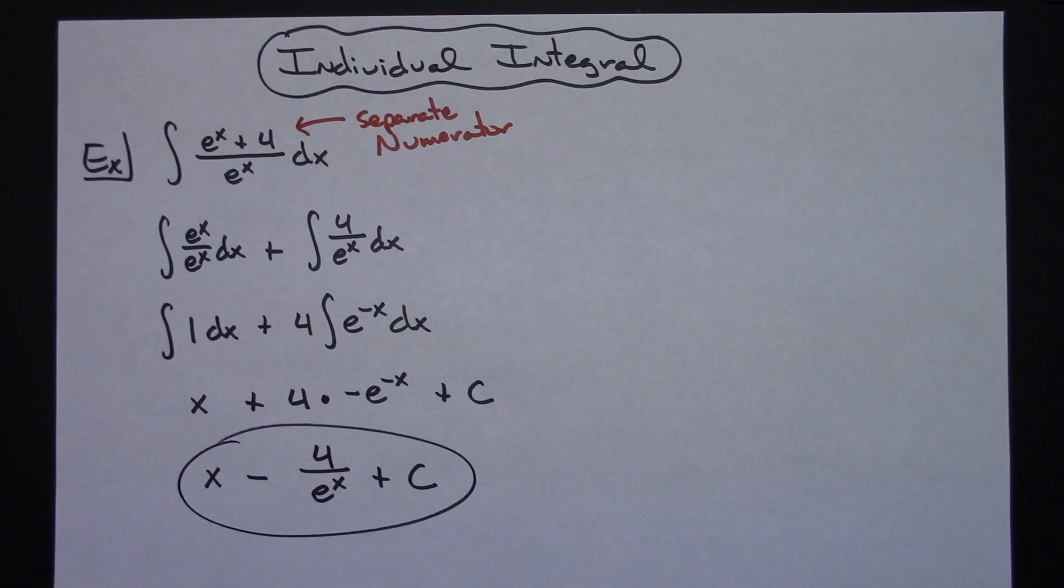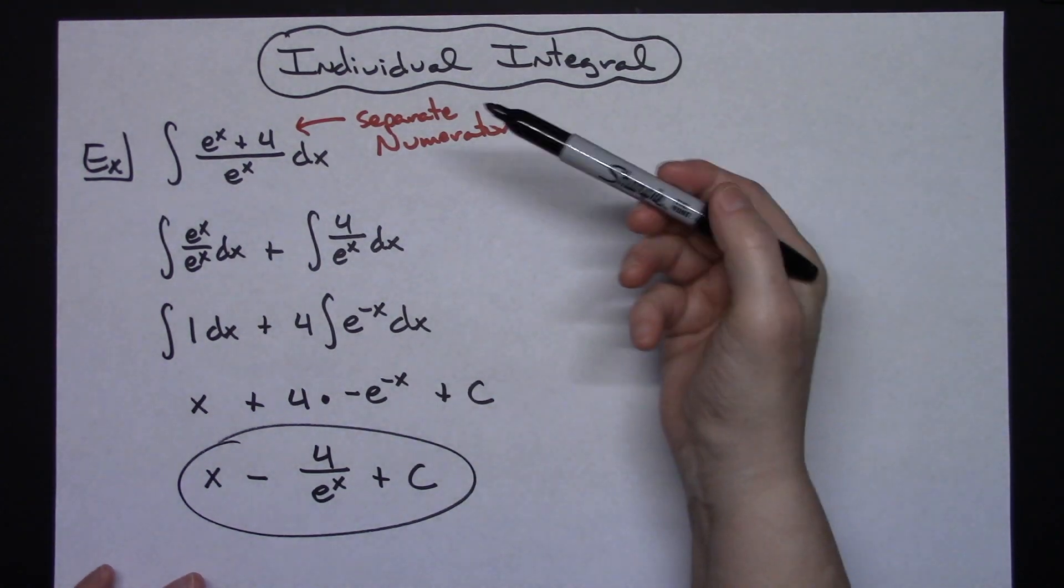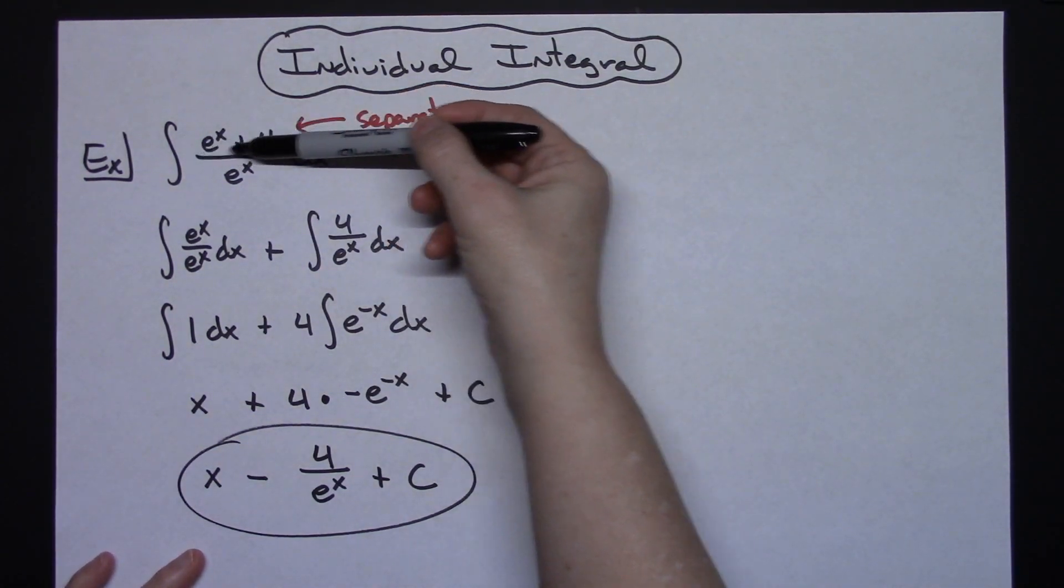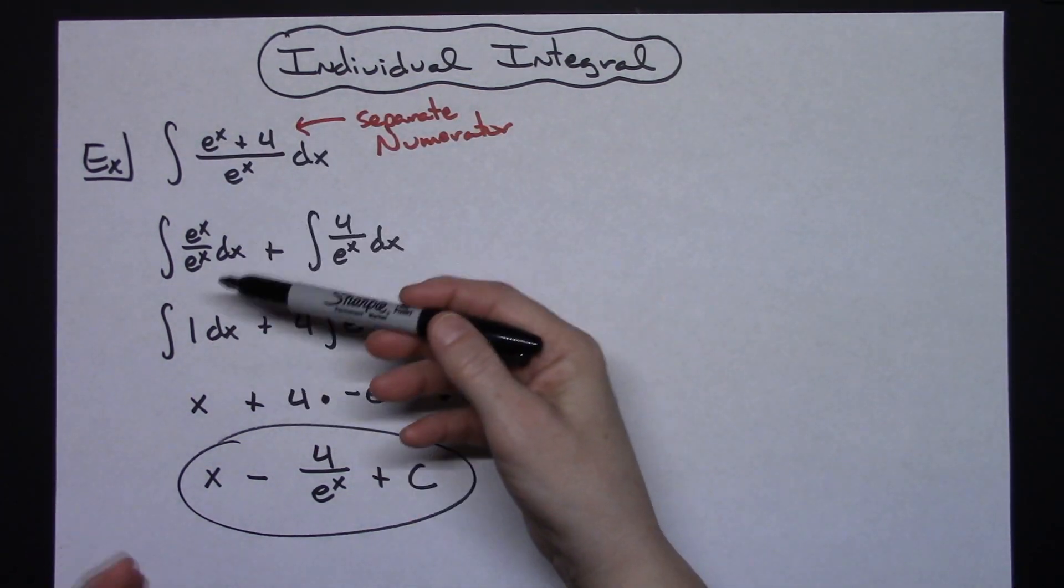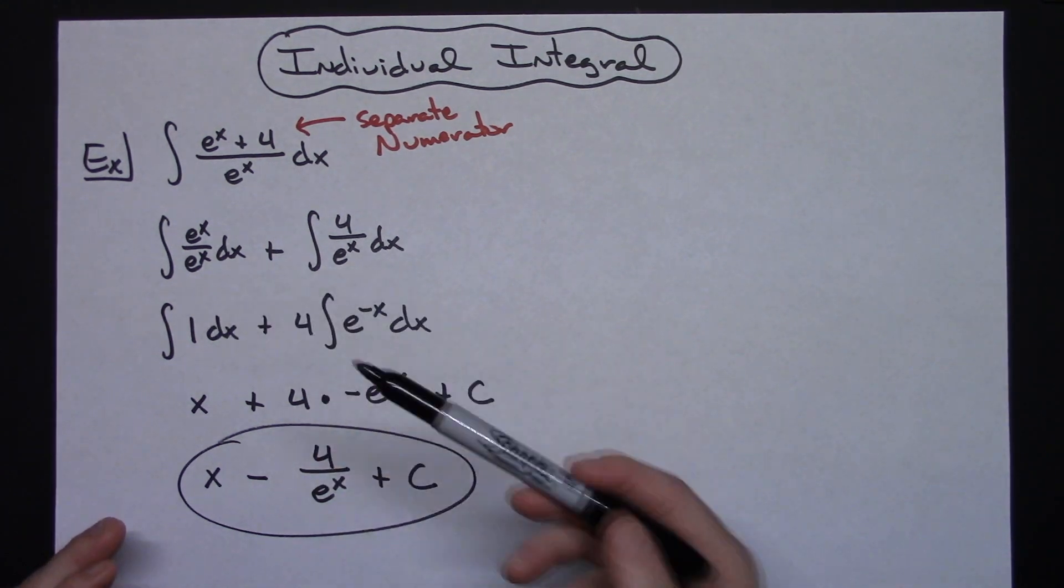So actually just a really straightforward integral that would be commonly found in a calc 1 class. The trick here is taking a look at that numerator and seeing that you can separate it into the two individual integrals.